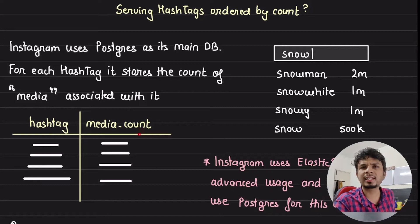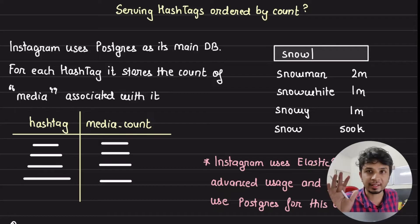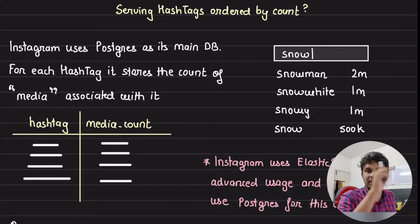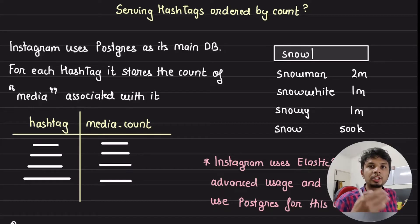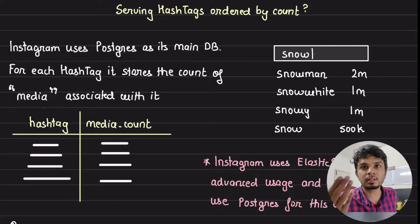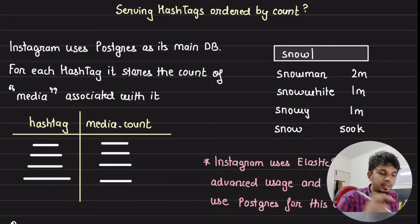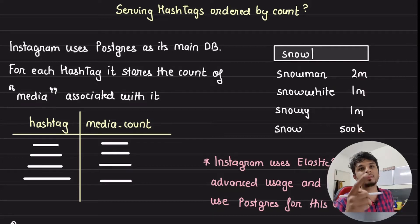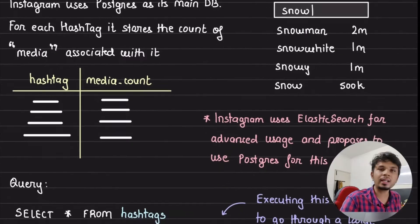They have a table for hashtags, and against each hashtag they store a media count — the total number of photos, videos, reels, and every kind of media associated with that hashtag. When searching, if you type a prefix like 'snow', you want to surface the top hashtags starting with 'snow' ordered by the most number of media. This needs to be served efficiently through Postgres.